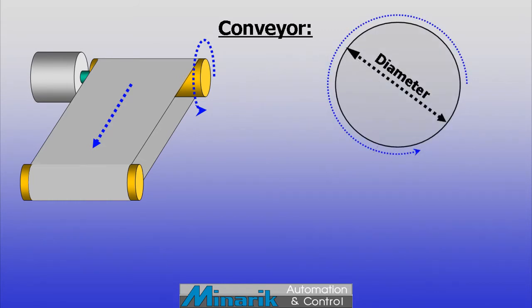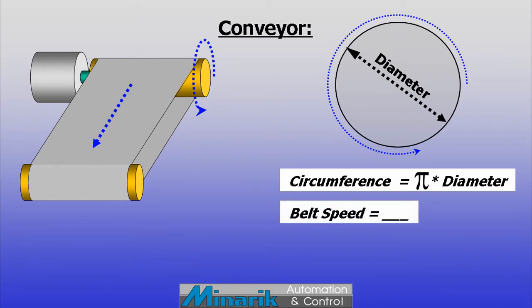Also, circumference is equal to pi times diameter. So if a rotary shaft is used to drive a pulley, the speed of the belt will be 3.14 times the diameter of the pulley, and the units will be feet per minute, centimeters per second, or similar.